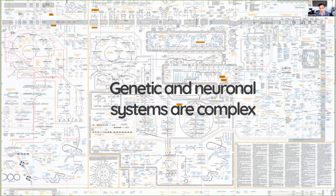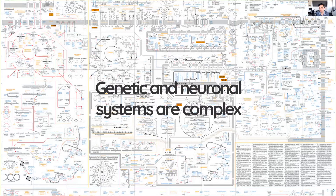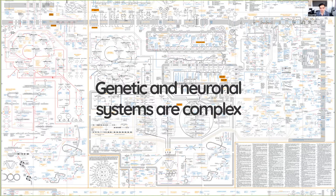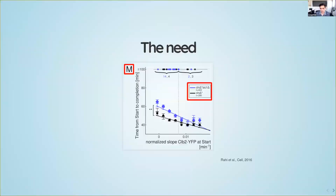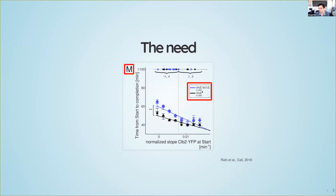My lab is broadly interested in genetic and neuronal systems. This slide shows how different pathways lead to cellular behavior and how complex they can be. To illustrate the need we have for computer science and machine learning, I've taken one panel out of my postdoc paper — panel M from figure eight — indicating how many cells we had to analyze to get this data. Here we're comparing two different conditions with around 300 and 400 cells in each.